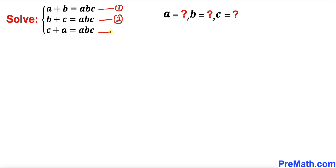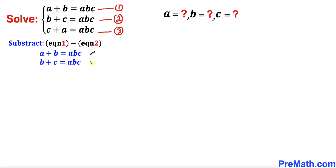And finally, equation number three. Our next step: let's subtract equation two from equation one. Here are equations one and two. Subtracting, the b and negative b cancel, and abc minus abc is zero on the right-hand side. So we get a minus c equals zero, which means a equals c.